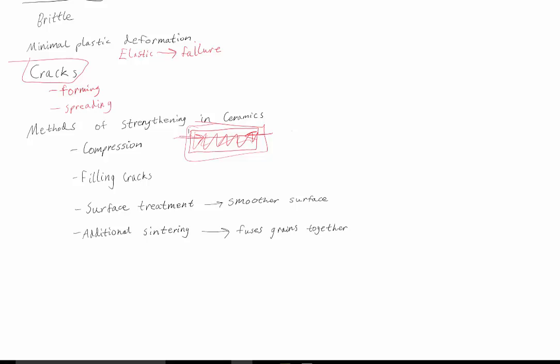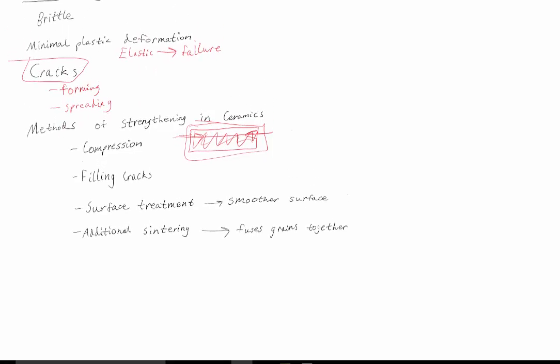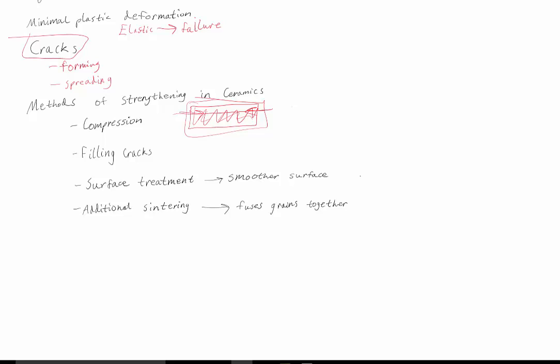The third method is surface treatment. A smoother surface makes it harder for a crack to start because there's no point on the smooth surface to make an obvious crack. But if you have a rough surface, there's already a gap for a crack to begin forming. With a smooth surface, there's no obvious spot, and it's harder to form cracks.